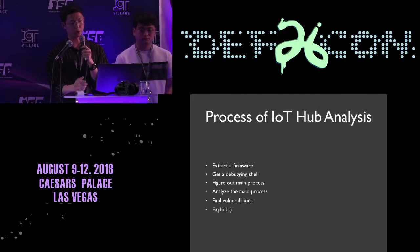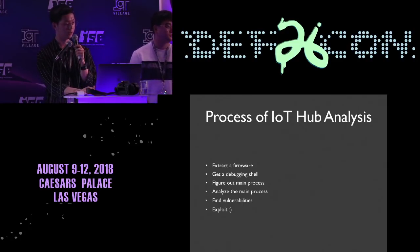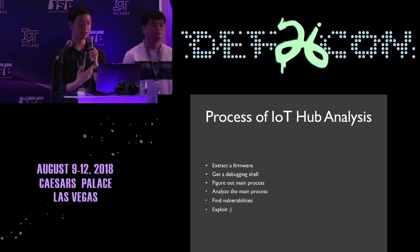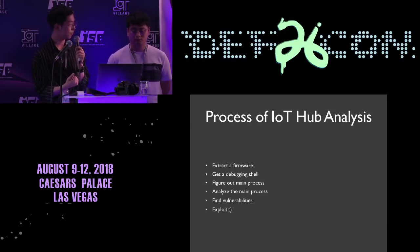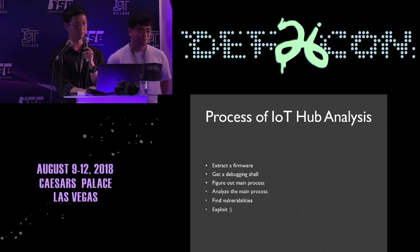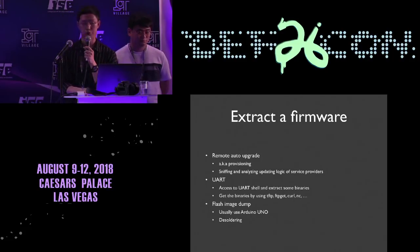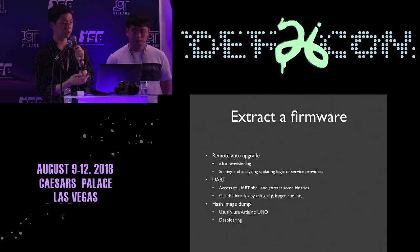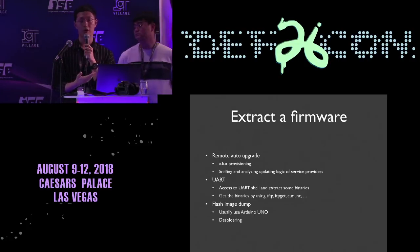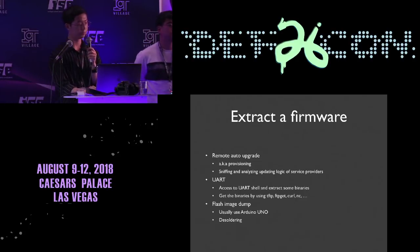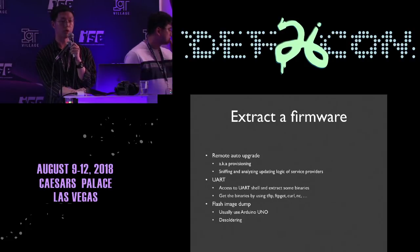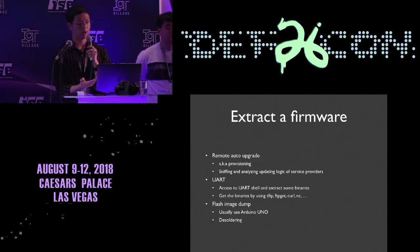There are six steps to analyze IoT devices. First, extract the firmware, since the functions to analyze are embedded within it. Second, acquire a command shell for debugging to see which processes are running. Third, identify which processes handle key requests. Fourth, extract the main binary. Fifth, analyze vulnerabilities. Sixth, exploit them. There are three ways to extract firmware: through provisioning by capturing the firmware update URL; via UART debugging port using commands like tftp, ftp-get, or curl; or by dumping flash memory directly using an Arduino Uno or by desoldering the flash chip.